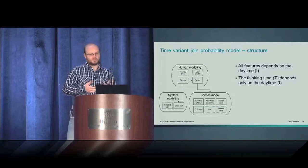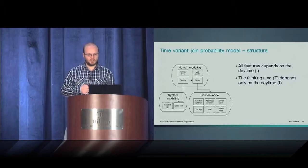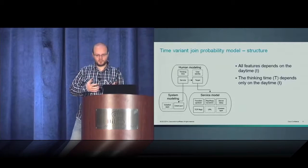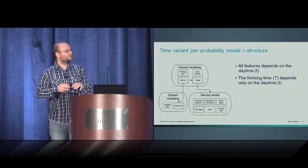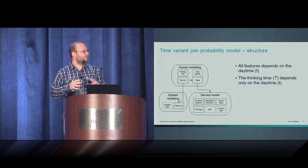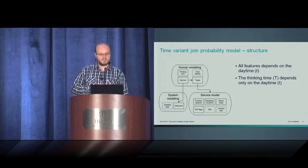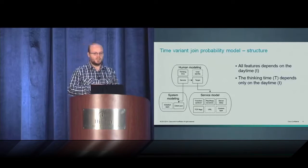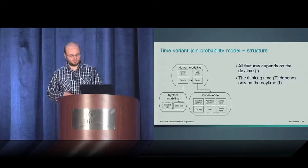The models that we propose have the following structure. They're composed of three major components. First component controls the human modeling. Second component controls the modeling of the user's operating system. And the last component controls the behavior of the remote service. Note that all features depend on the daytime, so we can model the changes in the user's behavior. And the second thing is that the thinking time depends only on daytime. The relations between different features of the model are denoted with these arrows. You can see that the service, which is the destination port of the request, and the target depend on the service and so on.